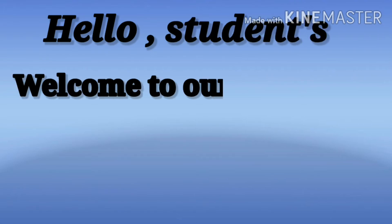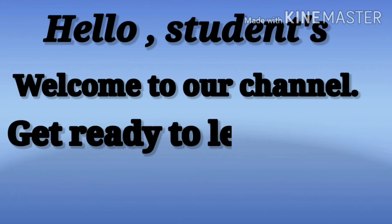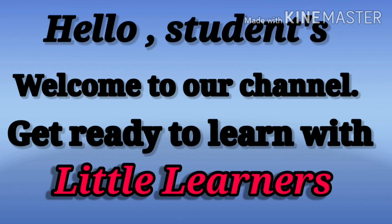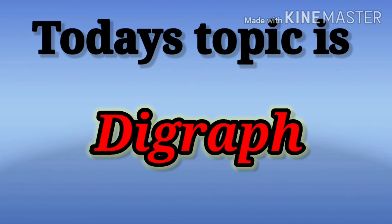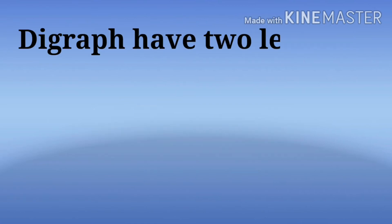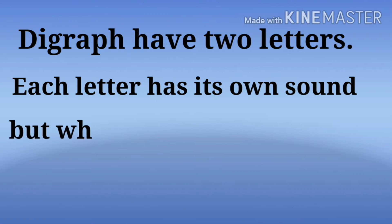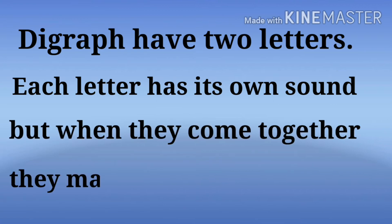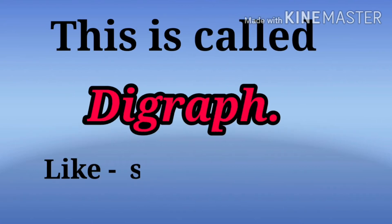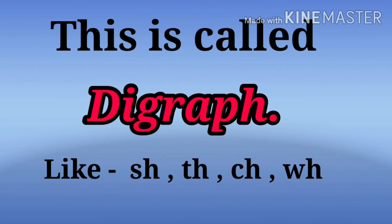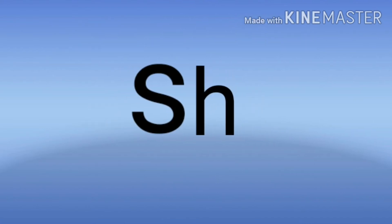Hello students, welcome to our channel. Get ready to learn with Little Learners. Today's topic is digraphs. Digraphs have two letters — each letter has its own sound, but when they come together they make a new sound. This is called a digraph. Examples include sh, th, ch, and wh.